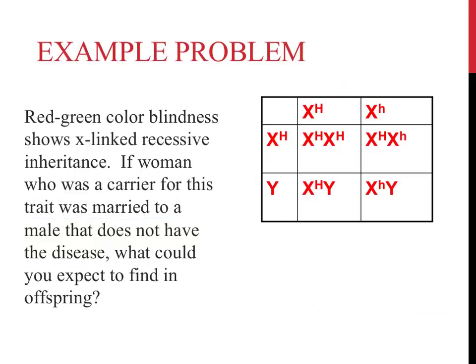Now that you have the outside of the Punnett square completed, you can fill it out. Drag all of the information to the right and down from each of the boxes, just like normal. You should have ended up with these results.